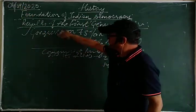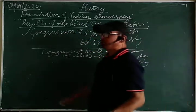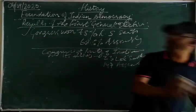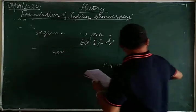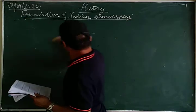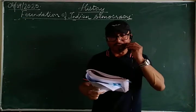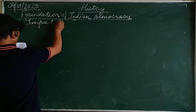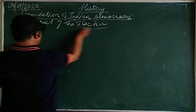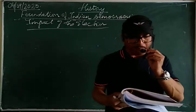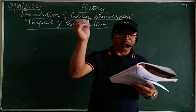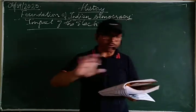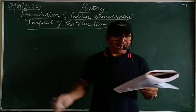Overall, the result of the first general election was clear — Congress completely swept the poll. The largest party was Congress, winning around 75% of Lok Sabha seats and 68.5% of assembly seats. Now let's move towards the impact of these results.